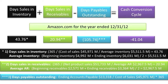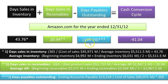What I want to do is point out a few very interesting things about Amazon's Cash Conversion Cycle. Amazon's Days Payables Outstanding of 105.74 indicates that on average Amazon makes its suppliers wait over 100 days to get paid. Amazon clearly has very good credit terms with its suppliers. In fact, because Amazon's Days Payables Outstanding is so long, its Cash Conversion Cycle has become so short that it is actually a negative 41.04 days.